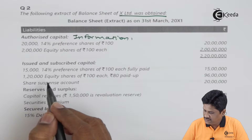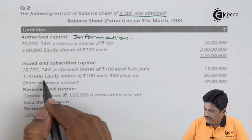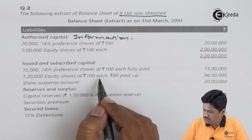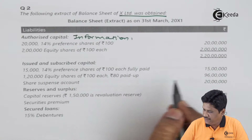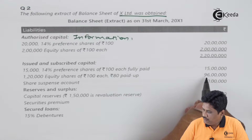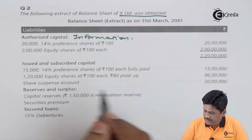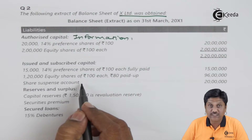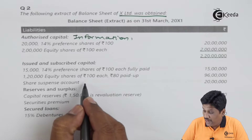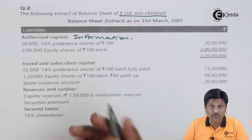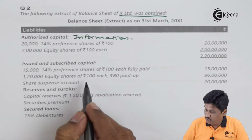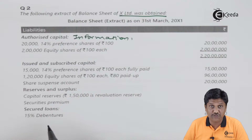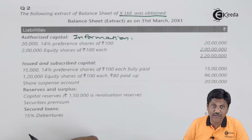Issued and subscribed capital: fifteen thousand 14% preference shares of rupees 100 each — fifteen lakhs; one lakh twenty thousand equity shares of rupees 100 each, 80 paid — 96 lakhs. There is also a share suspense account — at present I don't know what this is, so we have to go through the question to understand the meaning of this line.